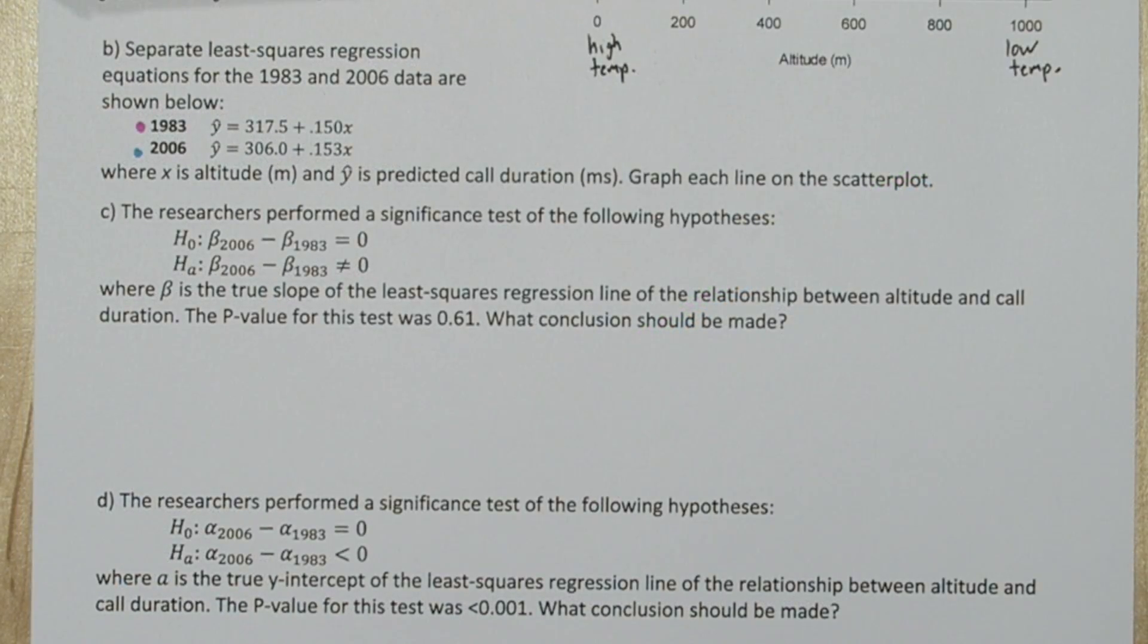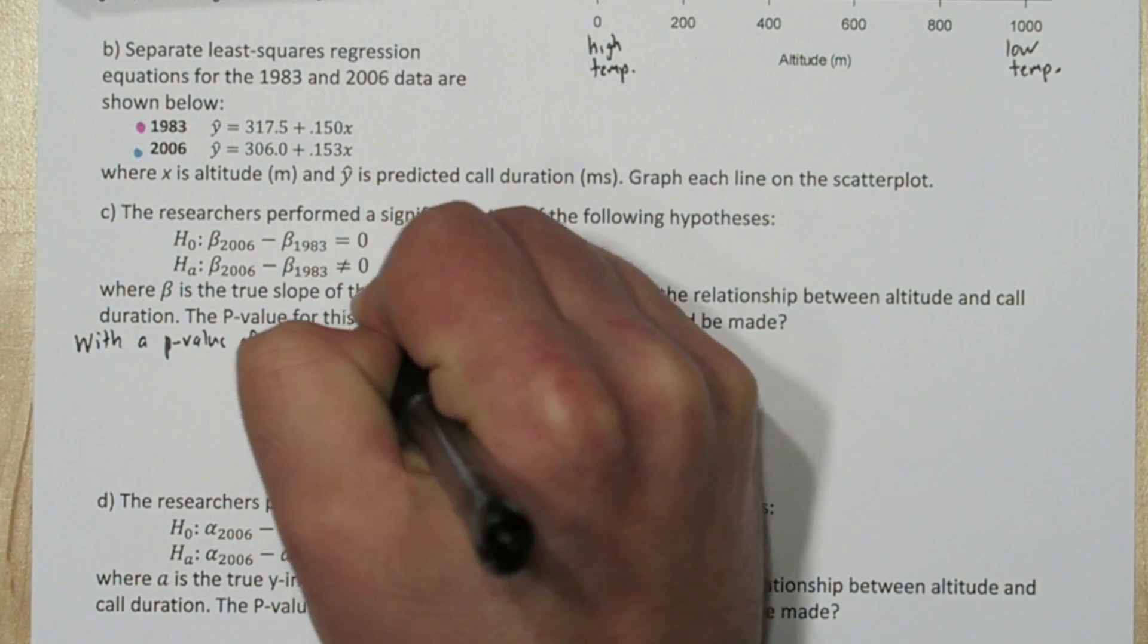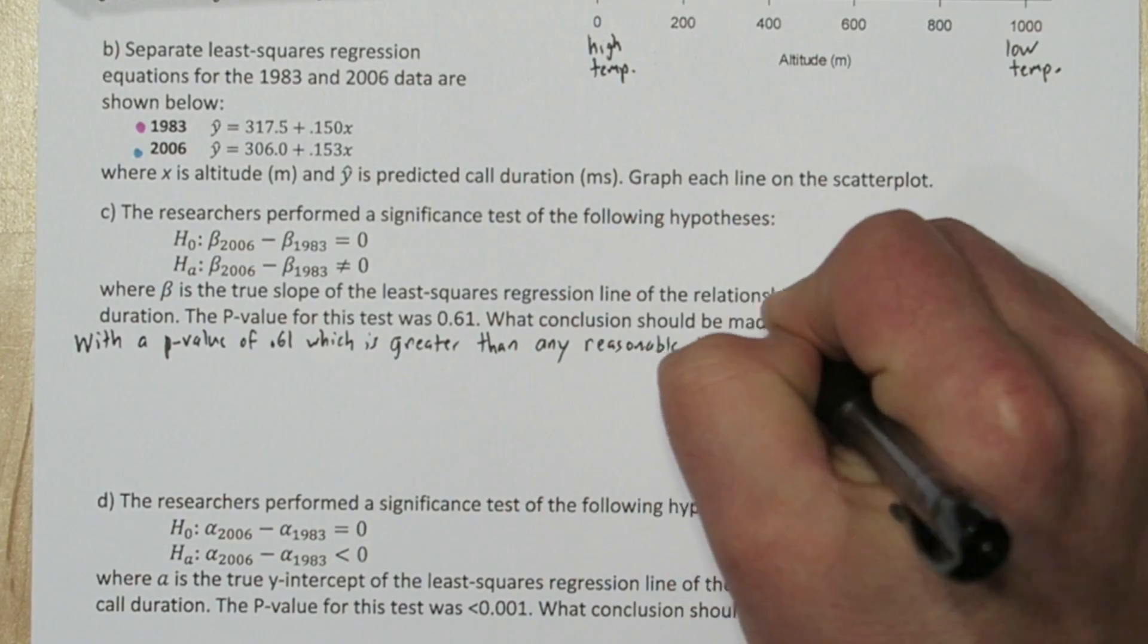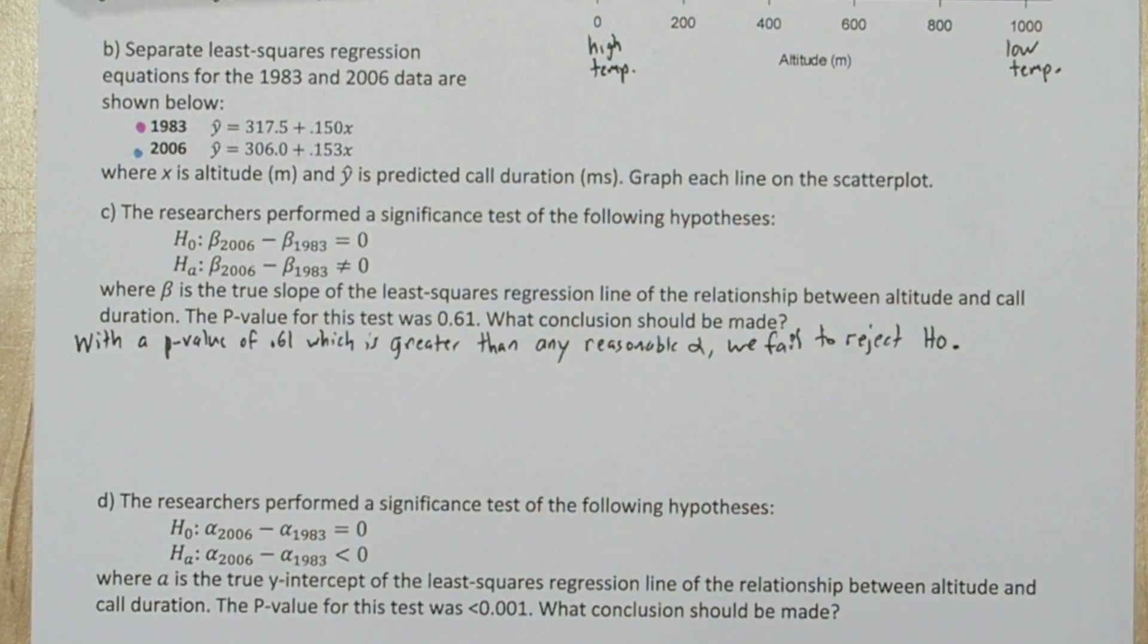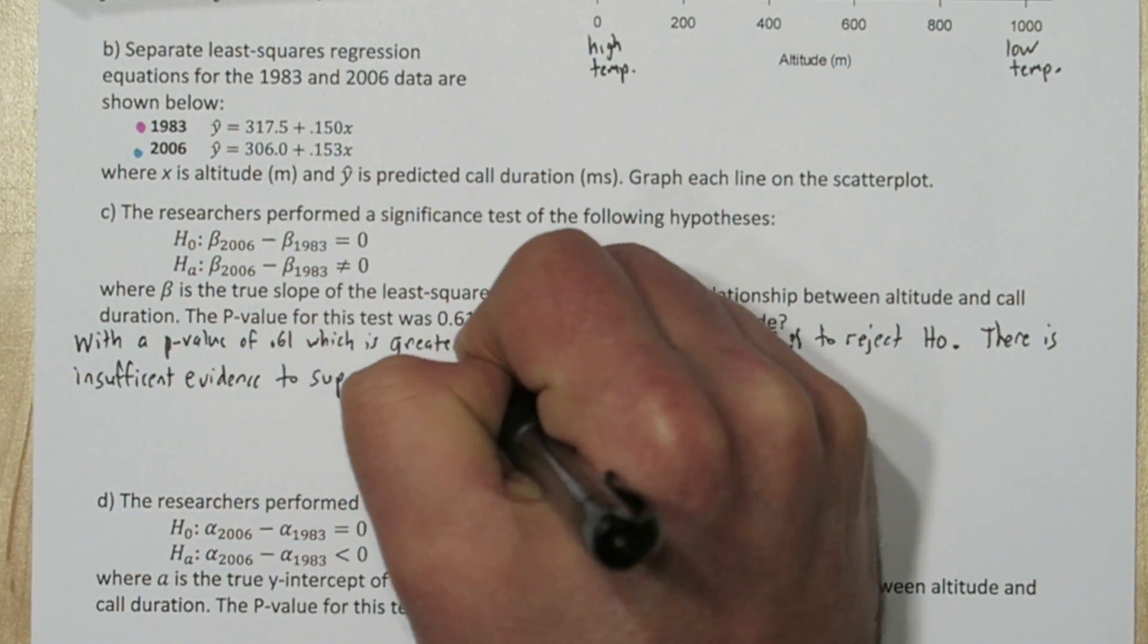Now the researchers actually checked to see if there was a significant difference between the two slopes, and they got a p-value of 0.61. So with a p-value of 0.61, which is greater than any reasonable alpha, we fail to reject the null hypothesis.